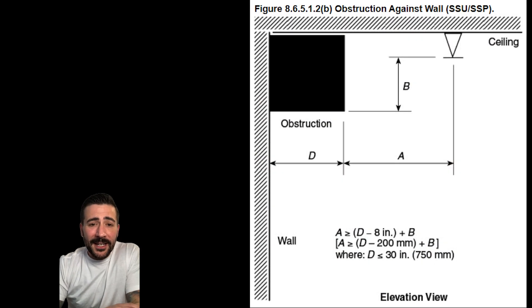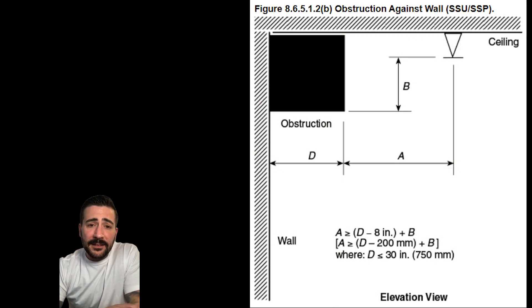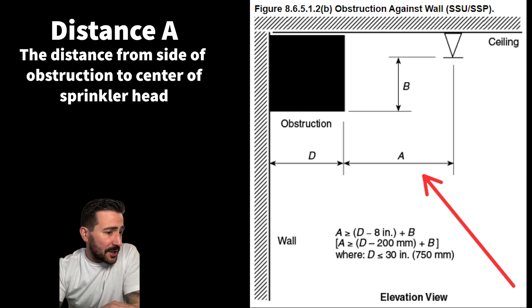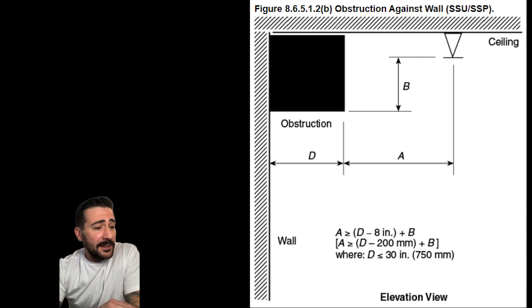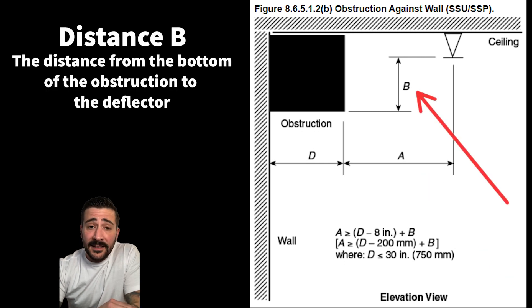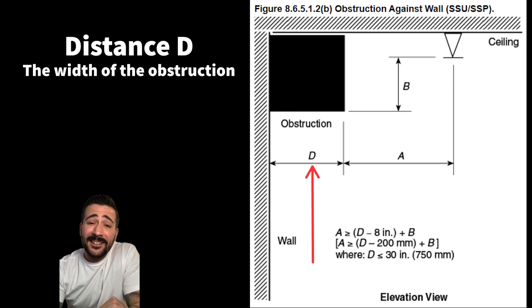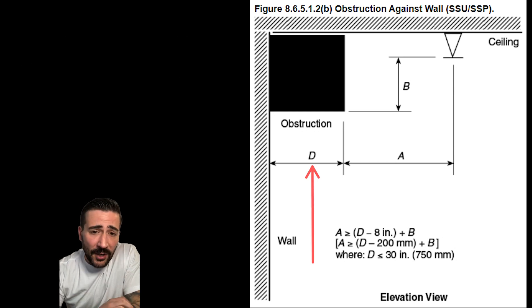All right, let's break this down piece by piece. Distance A is the distance from the side of the obstruction to the center of the sprinkler head. Distance B is the distance from the bottom of the obstruction to the deflector. And distance D is the width of the obstruction.